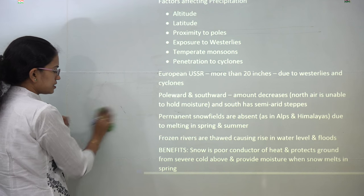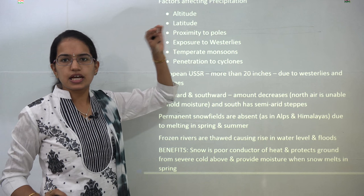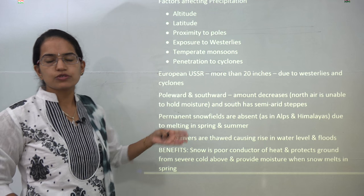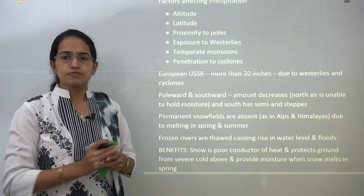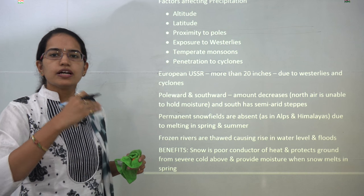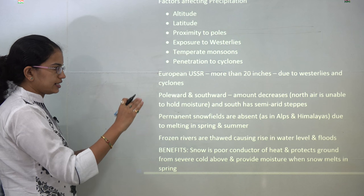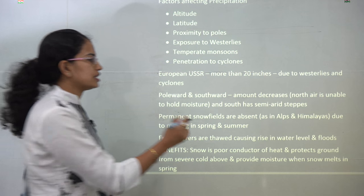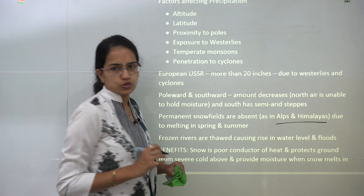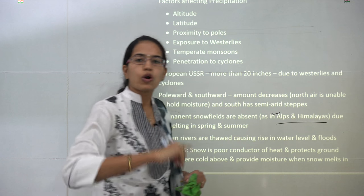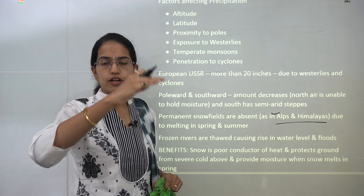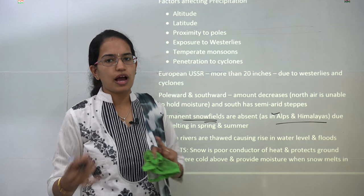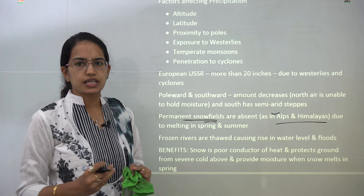The southern and northern boundaries would have very less rainfall compared to the central regions. This region does not have a permanent snow field, unlike the Alps and Himalayas, where the altitudinal concept operates due to the height of the mountains. Here, permanent snow fields cannot form because of spring and summer melting.